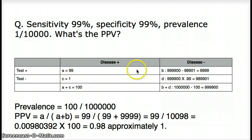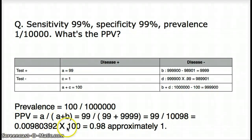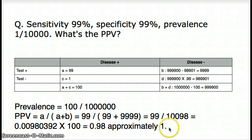Now we can jump to the question: what's the positive predictive value? PPV is A divided by A plus B. In this case, A is 99, and A plus B is 99 plus 9,999, which gives us 99 divided by 10,098. When you compute that and multiply by 100 to get a percentage, the value is approximately 0.98%, which is roughly 1%. So the positive predictive value for this particular disease is going to be about 1%.